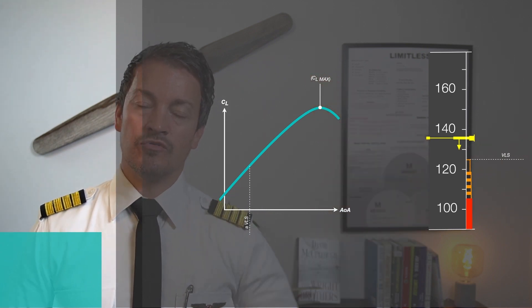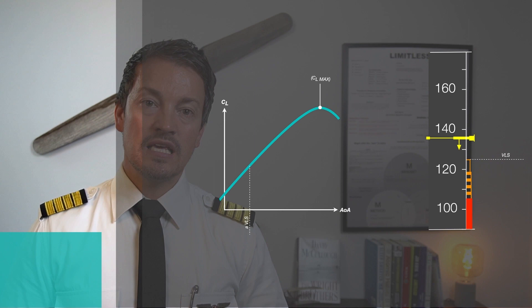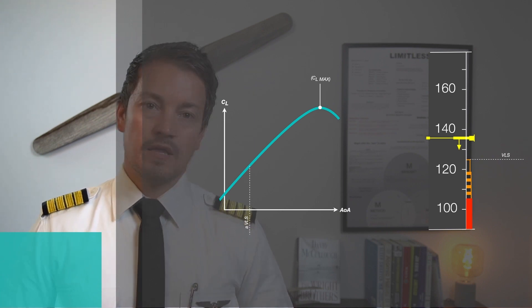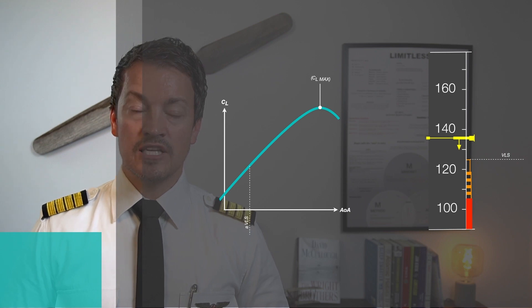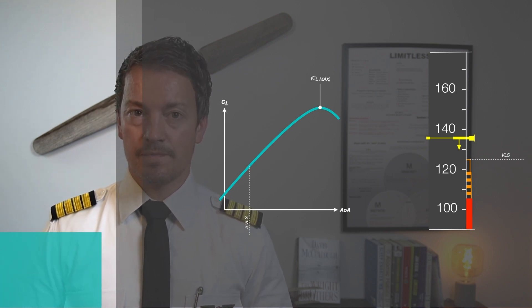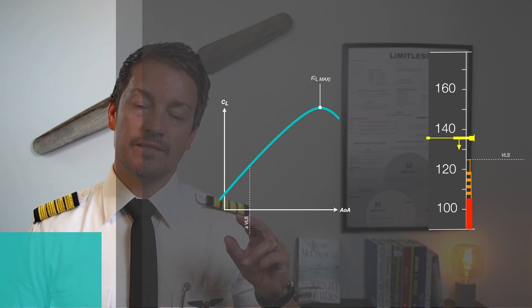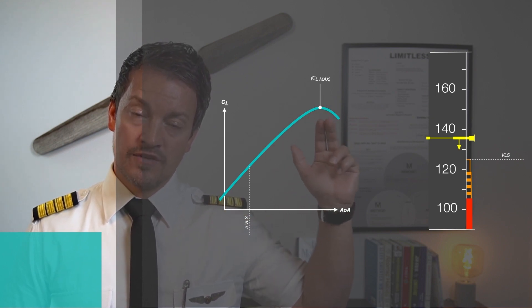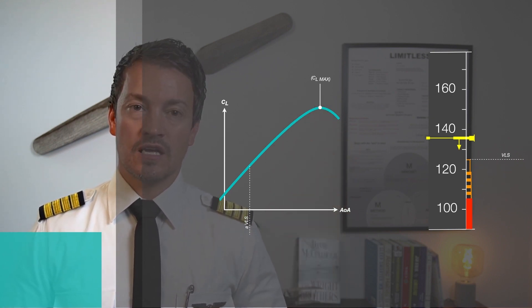You should not be flying below VLS even with your aircraft fully configured. The VLS value is the lowest selectable speed, but it does depend on the configuration of the aircraft. For example, the VLS has a 28% margin to the stall speed in clean configuration.